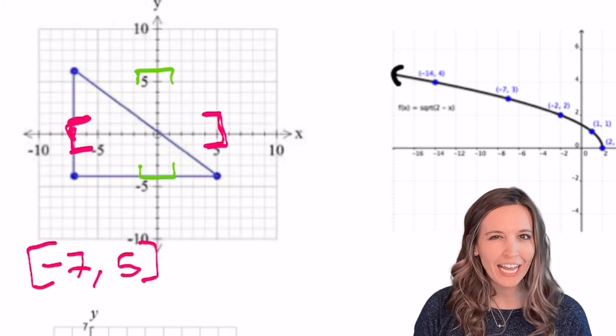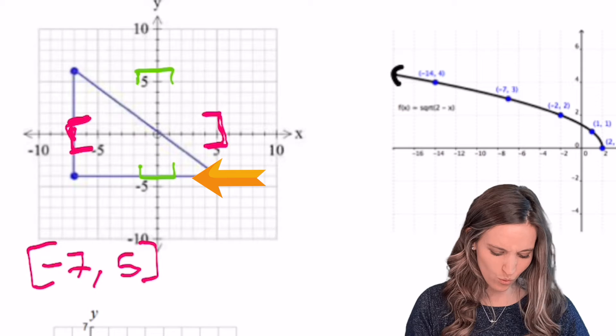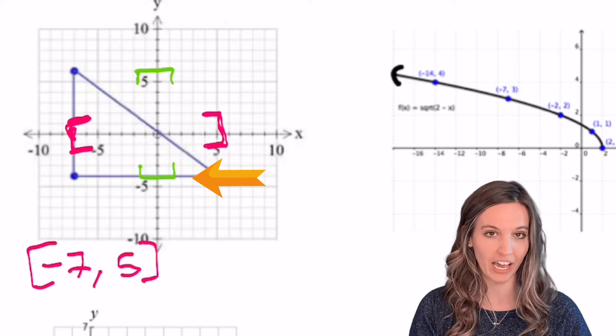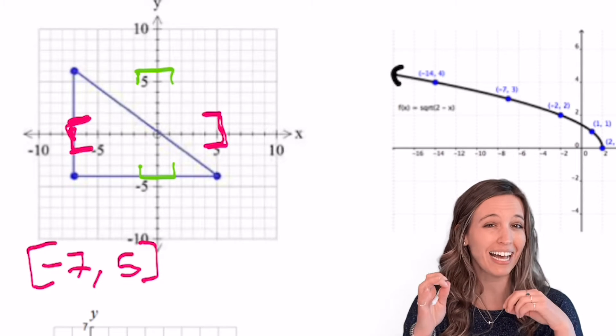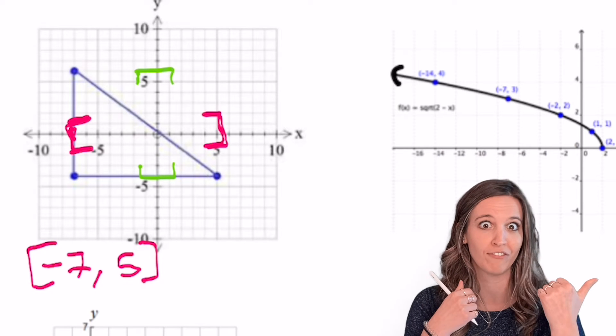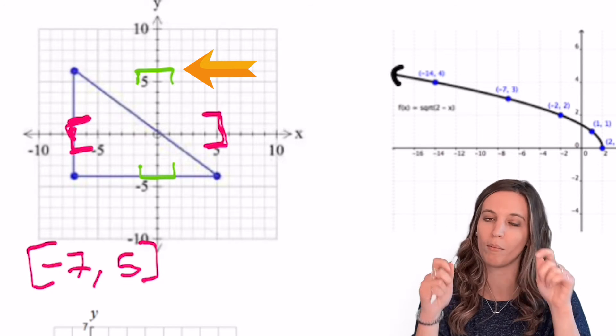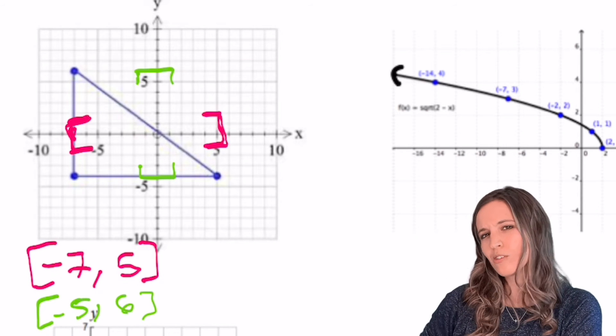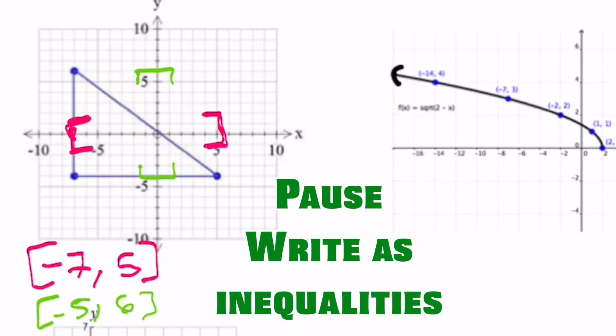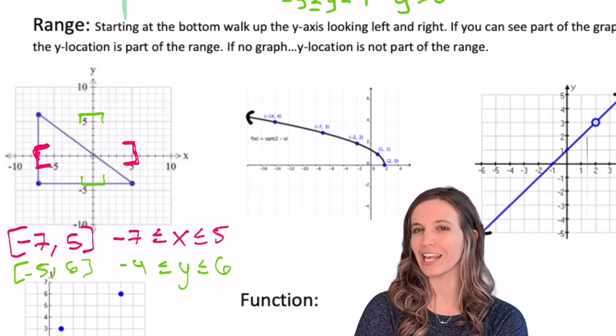Alright, so for that range, I'm going to climb that y-axis looking left and right. Where do I very first see the graph? Right there at negative 5. Okay, and it exists there so I'm going to put a bracket. And then as I climb up, the very last place I can see it to the left of me is 6. It exists there also so I'm going to put a bracket. Negative 5 inclusive to 6 inclusive. Can you write those as inequalities? Give it a shot. Check those inequalities. I really think we're getting the hang of this.